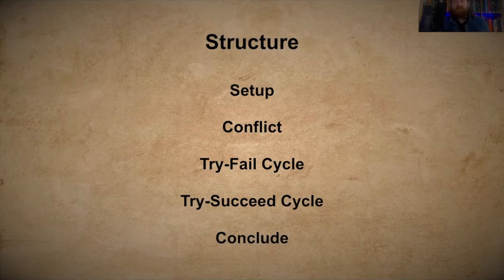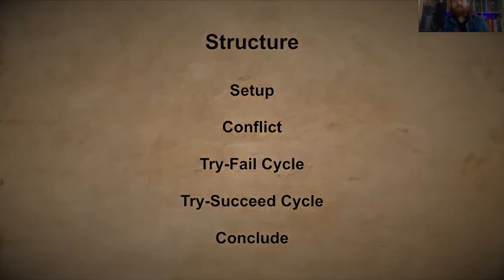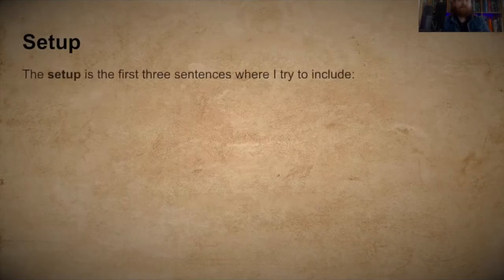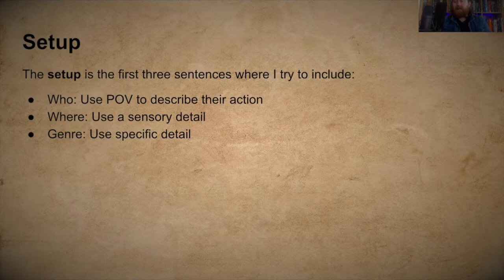The setup is the first three sentences — though you don't have to restrict yourself too much. In those first three sentences I want to include who, where, and the genre, and use some point of view to describe the action. I want to give a sense of place and environment, use some sensory detail to get the reader to experience something early on, and include a specific detail about the genre so the reader knows what they're getting into.